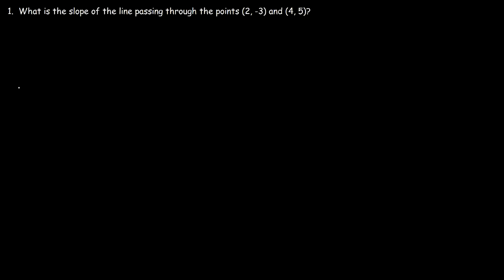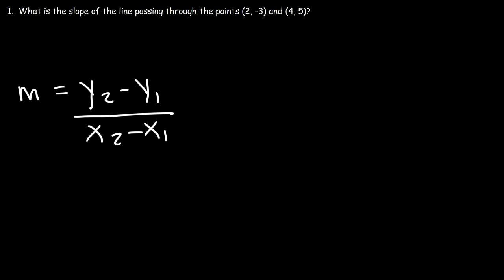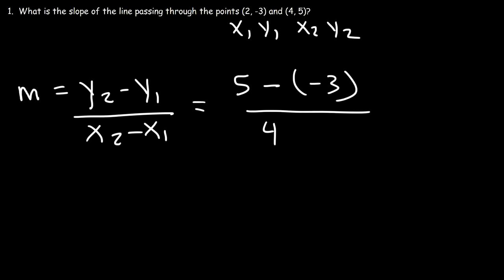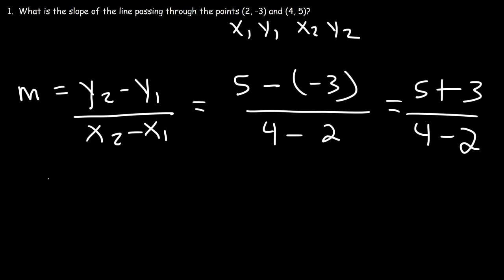To calculate the slope between two points, use the formula: y2 minus y1 divided by x2 minus x1. The first number is x, the second is y. So let's call (2, -3) x1, y1 and (4, 5) x2, y2. So y2 is 5, y1 is -3, x2 is 4, x1 is 2. Now 5 minus negative 3 is the same as 5 plus 3, which is 8. 4 minus 2 is 2, and 8 divided by 2 is 4. So the slope is 4.